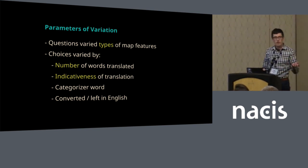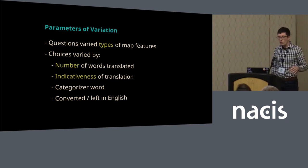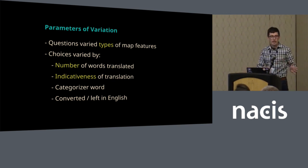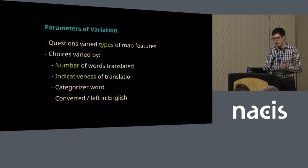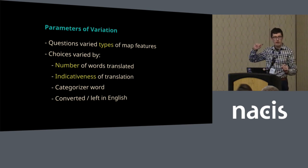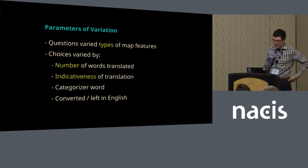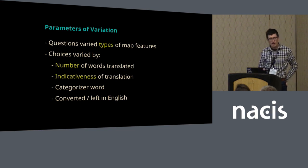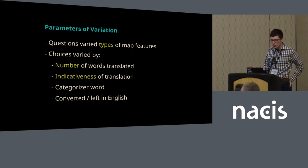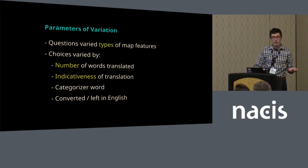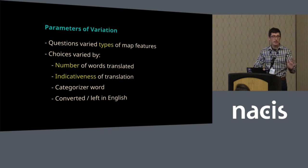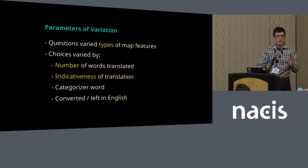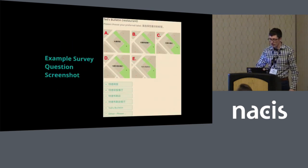For a given place, the things that varied were the number of words that were translated in the label, whether the translation accurately indicated the type of place that was there, the inclusion of a categorizer word like mountain or street, and whether participants were given the option of just leaving the word in English.